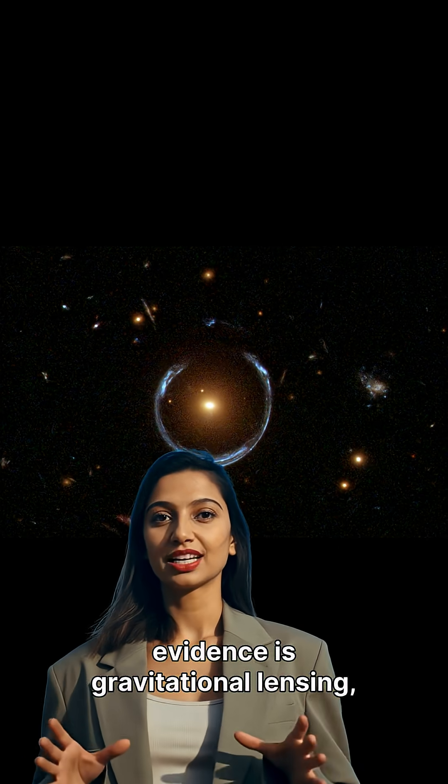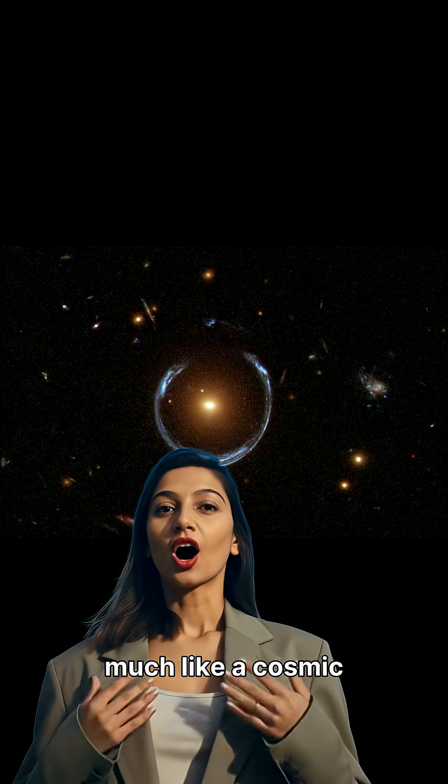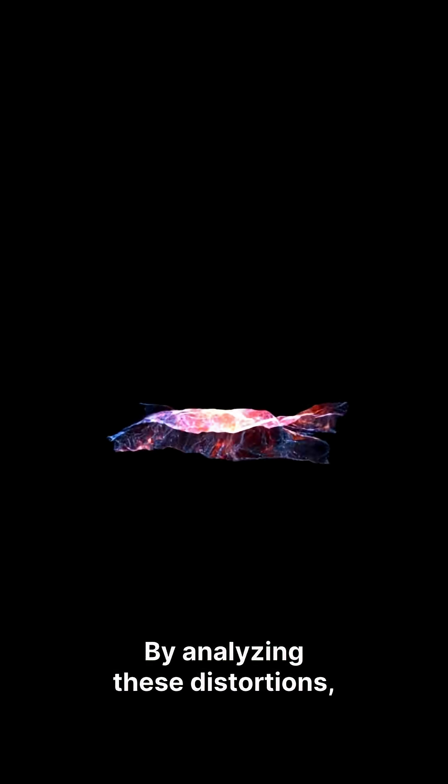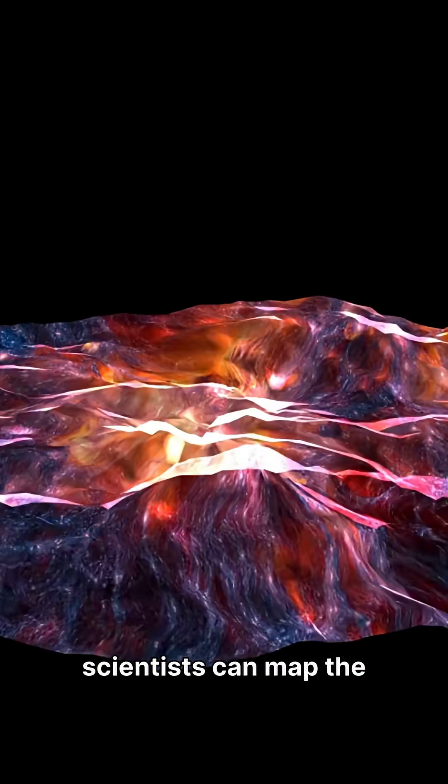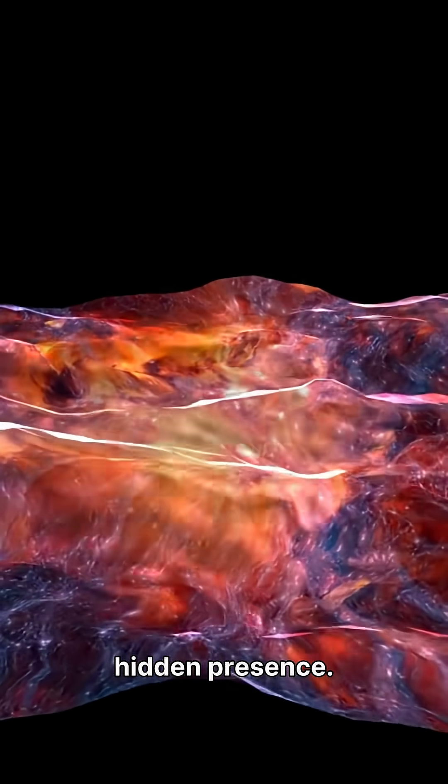Another compelling piece of evidence is gravitational lensing, where massive objects bend the path of light, much like a cosmic magnifying glass. By analyzing these distortions, scientists can map the distribution of this invisible dark matter, revealing its hidden presence.